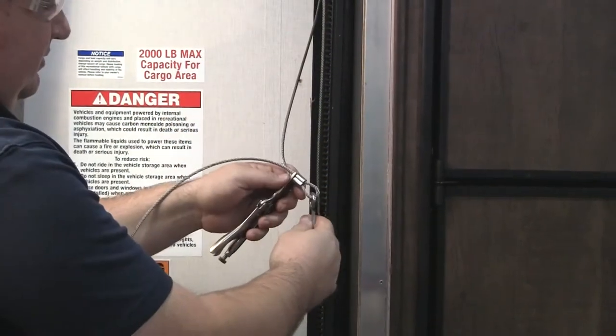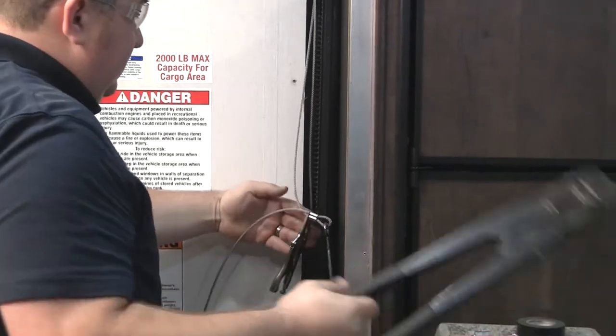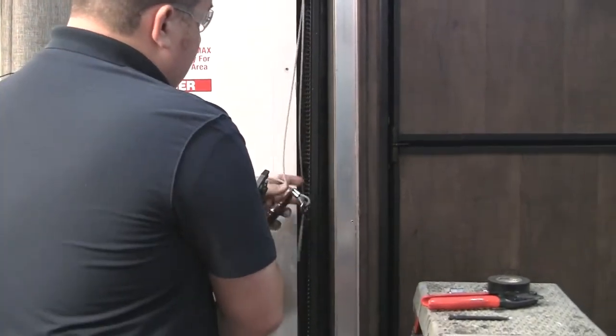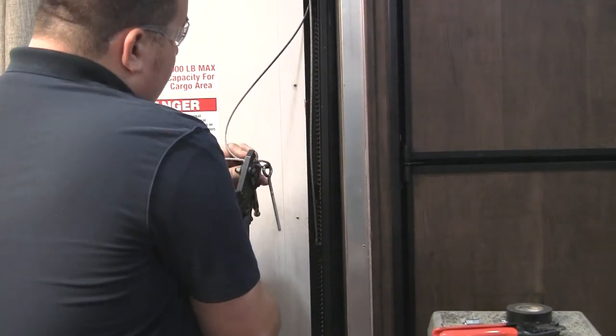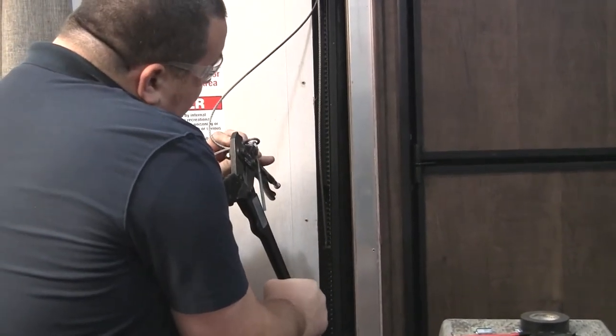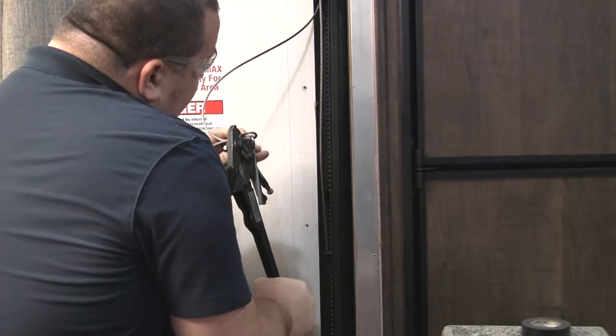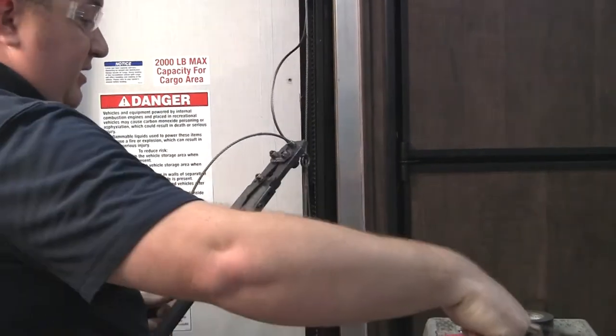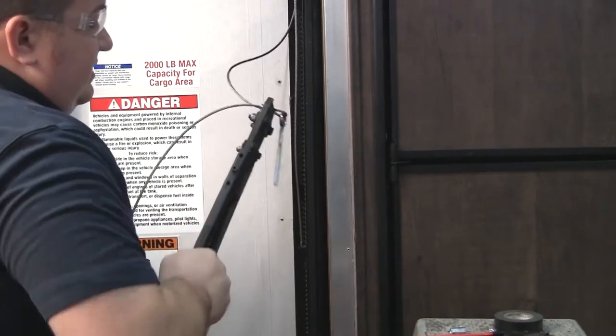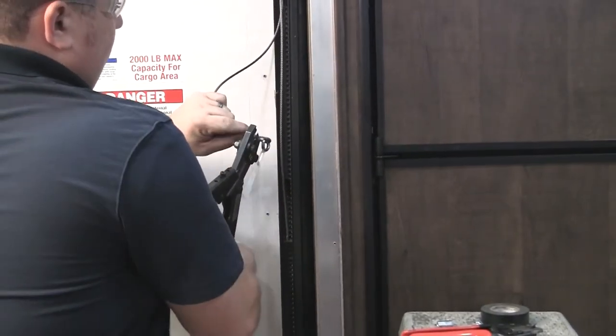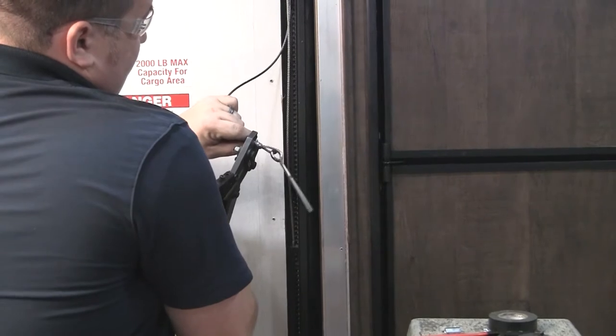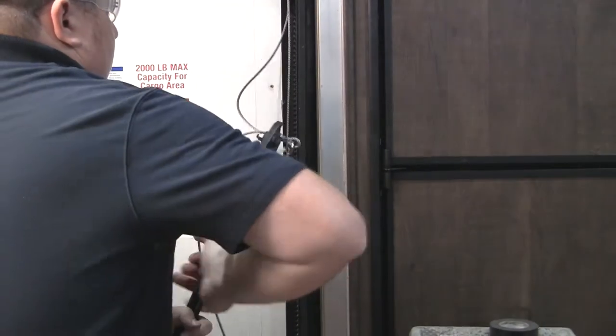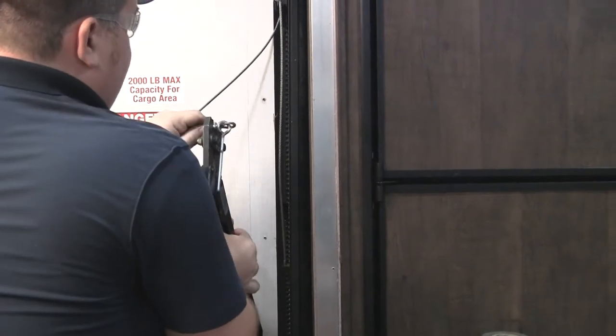With the eye bolt out we're going to go ahead and crimp the cable into place. These cables are rated for 2,000 pounds and to keep that integrity we've got to crimp this ferrule three times. So I start with one crimp on one side, the other crimp on the other side, and then the middle last.